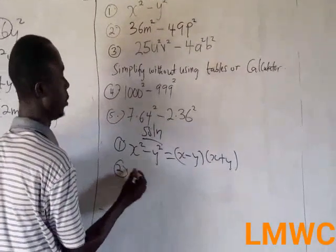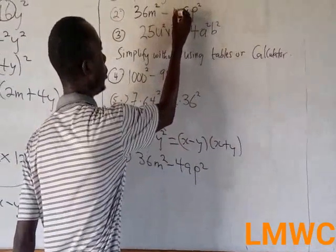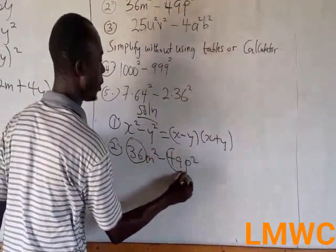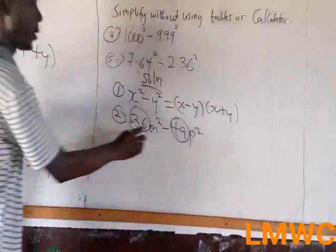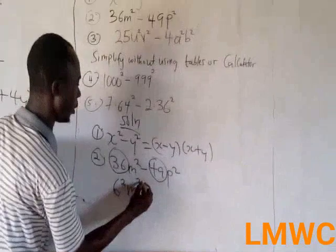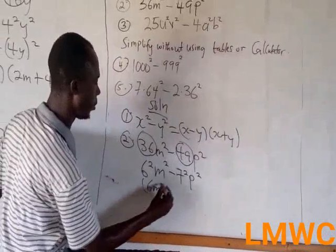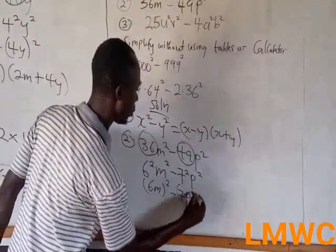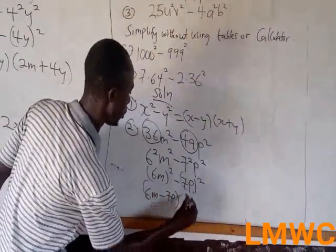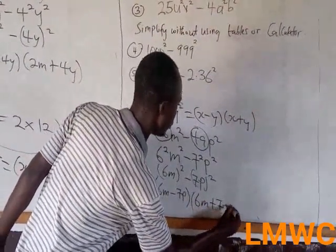Question 2: 36m squared minus 49p squared. Both 36 and 49 are perfect squares, because 6 times 6 is 36 and 7 times 7 is 49. So it becomes 6 squared m squared minus 7 squared p squared, which factors as (6m minus 7p)(6m plus 7p).